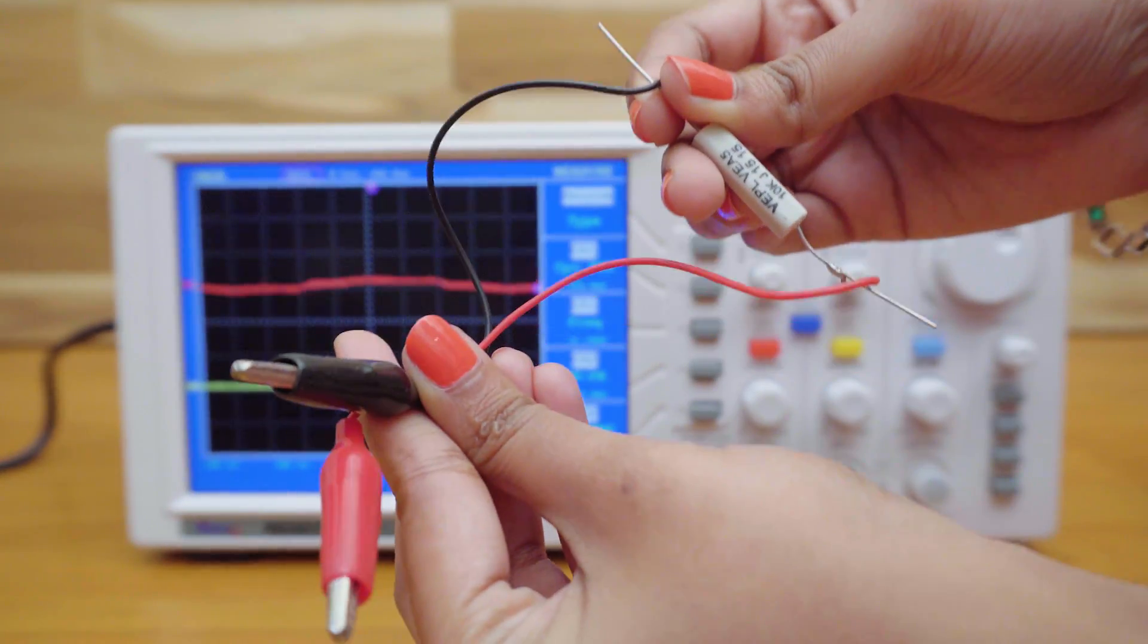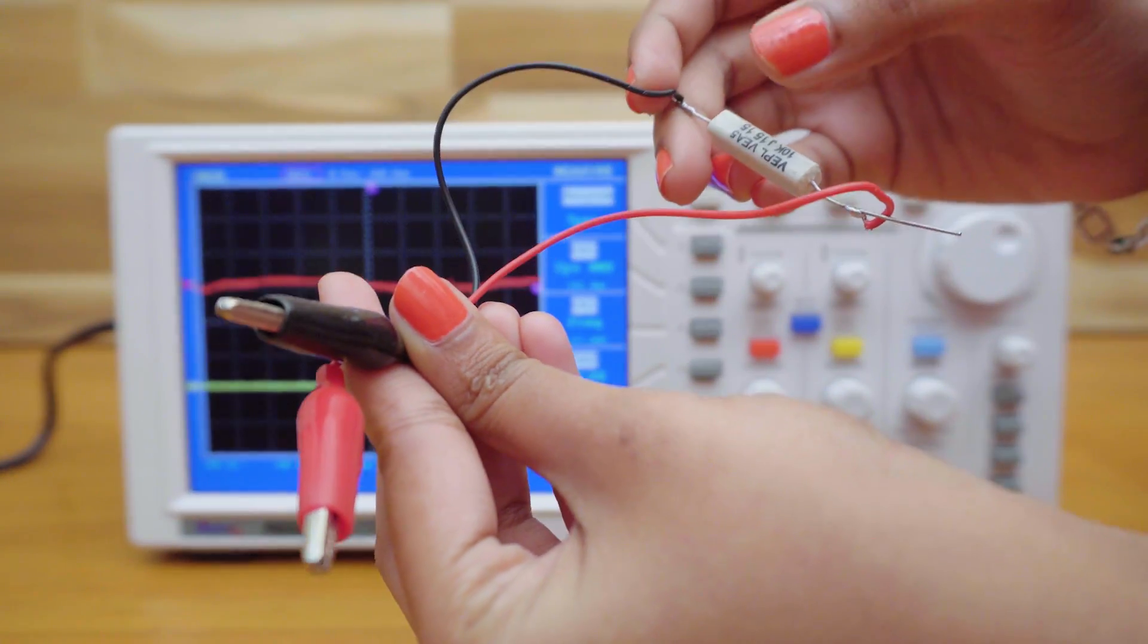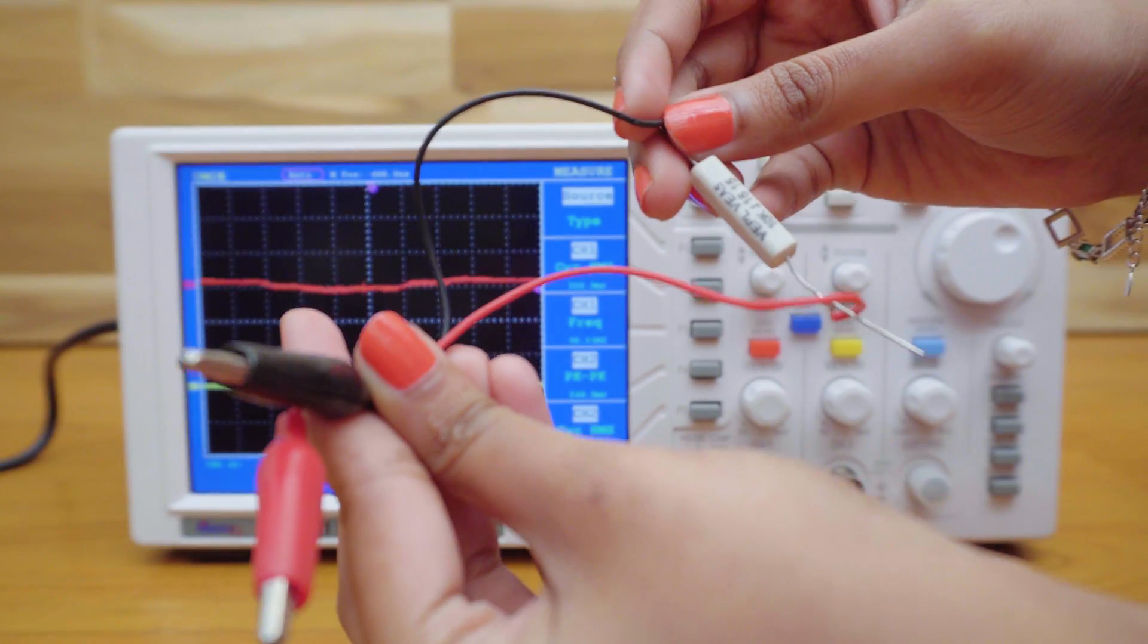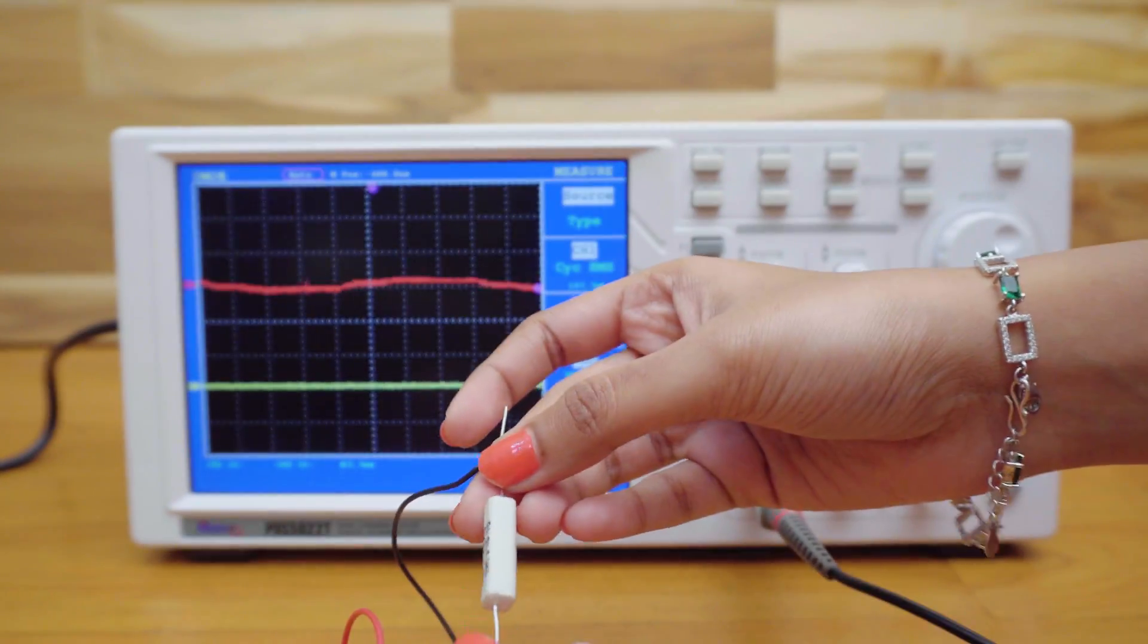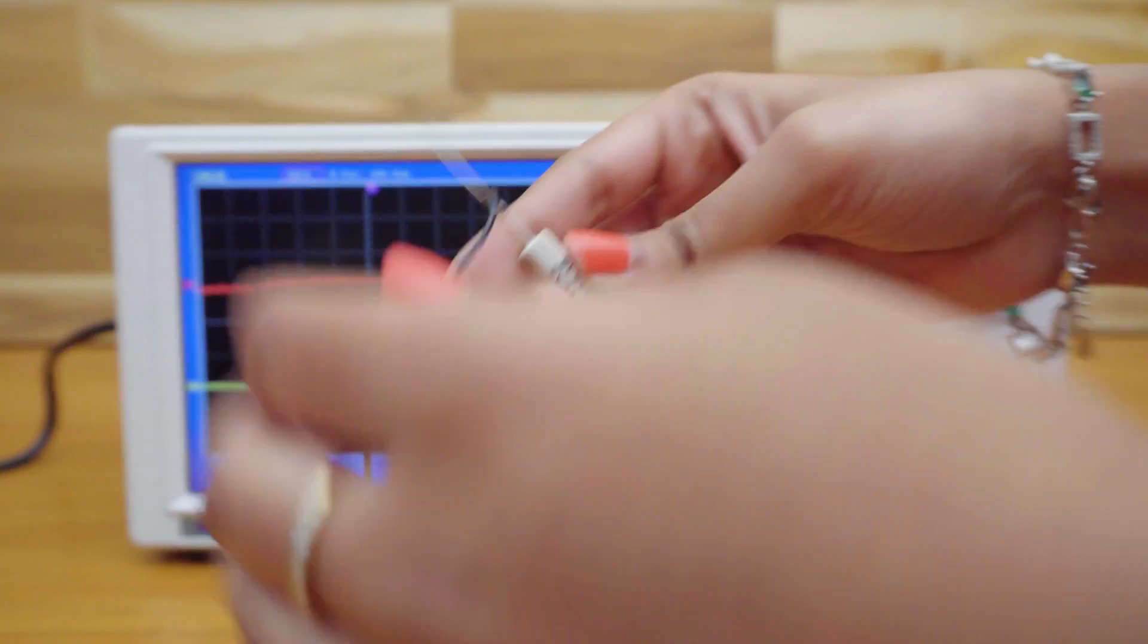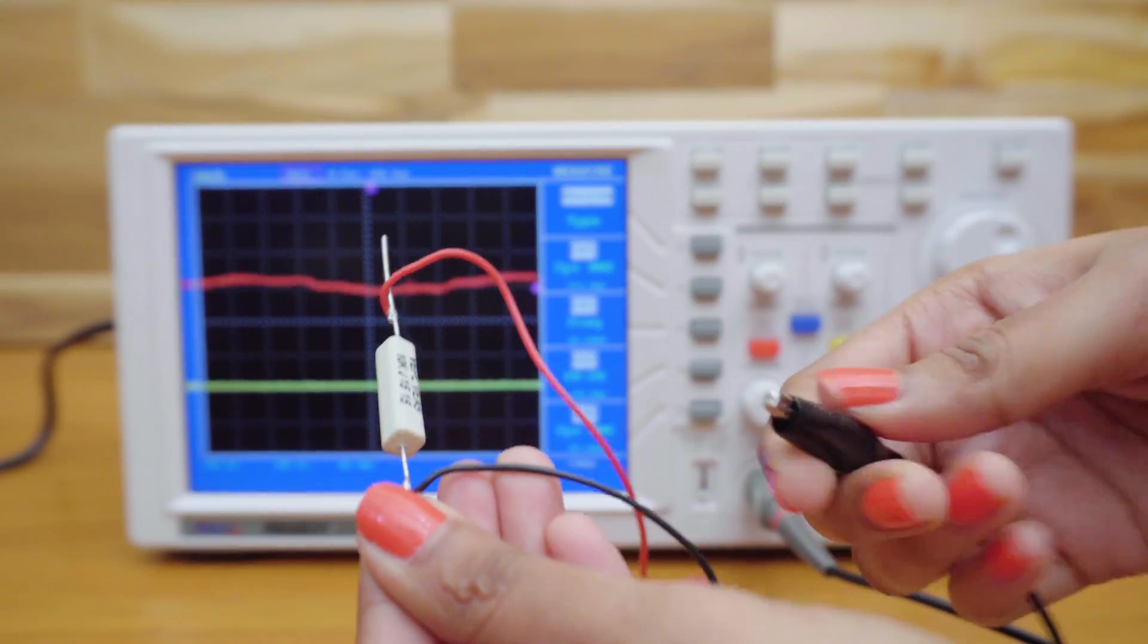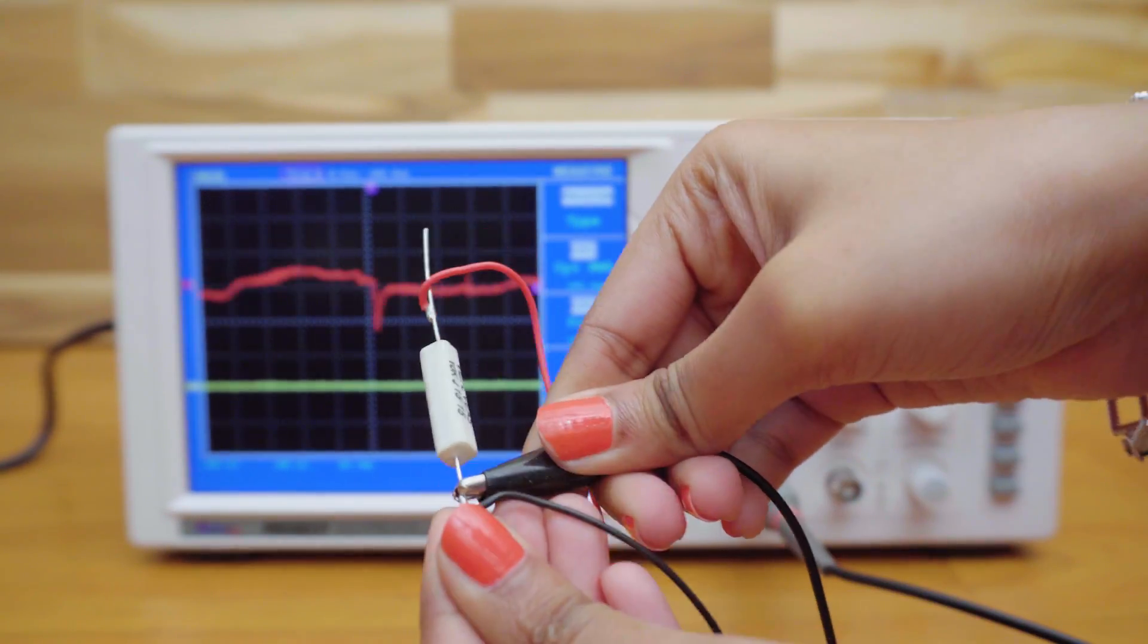I have made this extra attachment to my probe using a 10kohm resistor and two crocodile clips. I'm connecting this resistor parallel to my probe. This reduces the input impedance and sensitivity of the DSO so that we can work easily without any confusion.